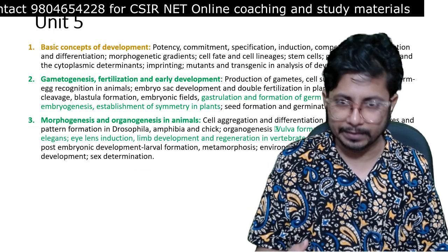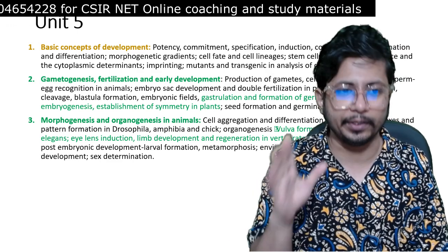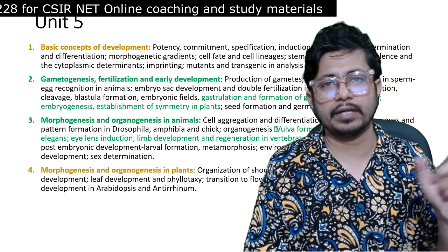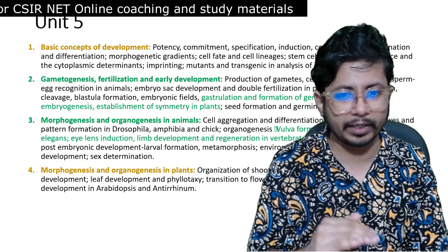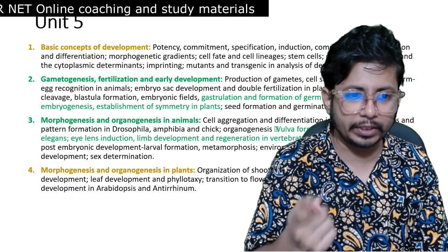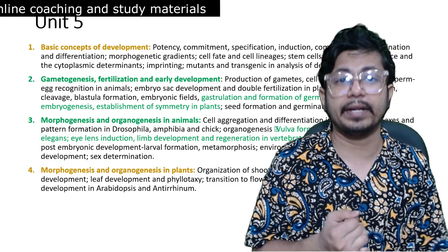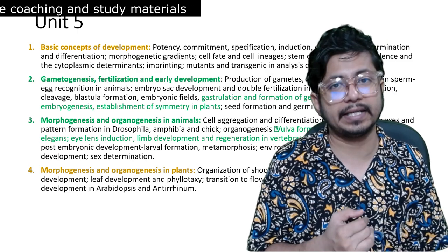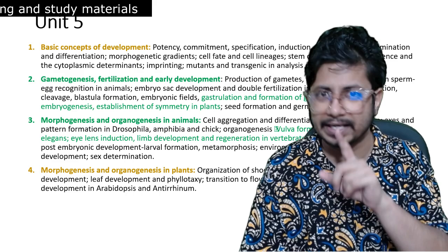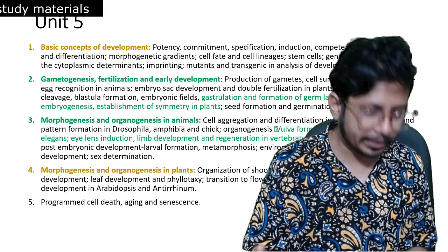Next is morphogenesis and organogenesis in animals - vulva development in C. elegans and limb development in tetrapods are very important. For morphogenesis and organogenesis in plants, marked in yellow as moderately important, we have shoot and root apical meristem formation, shoot and root development, leaf development, phyllotaxy, and flowering. Particularly the flowering part - floral development and architecture - is very important for CSIR NET.